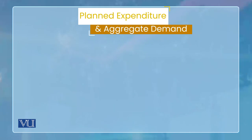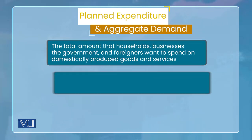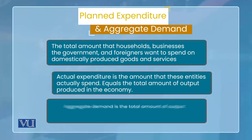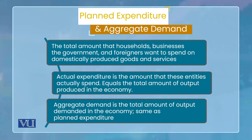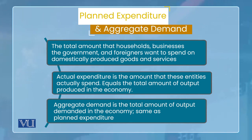तो उसमें सबसे पहला important point जहां से हम start लेंगे वो ये है कि हमारा जो model है, चूँकि वो Aggregate Demand-Aggregate Supply model कहलाता है, तो we will start from aggregate demand. तो सबसे पहले ये आएगा कि what are the components of aggregate demand? तो aggregate demand के components में हम तब जा सकते हैं जब हमें ये idea हो कि aggregate demand कहते किसको है — उसकी definition क्या है।